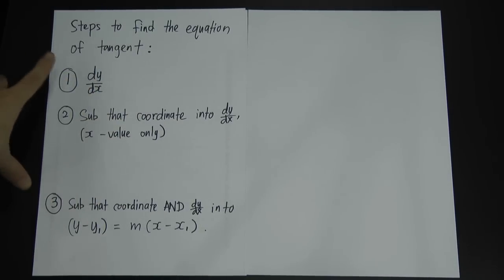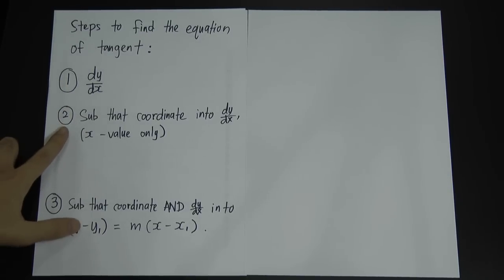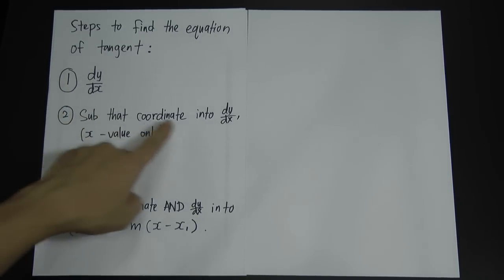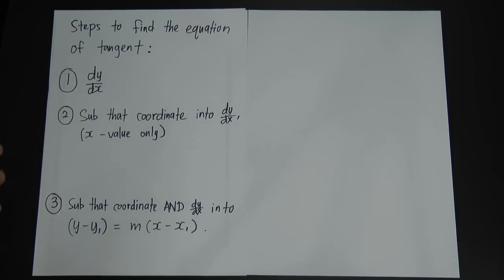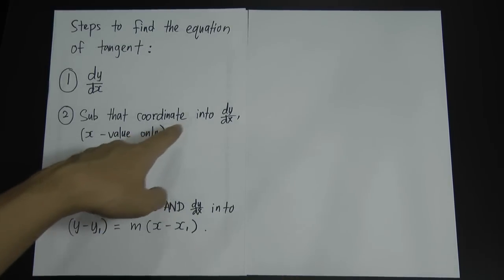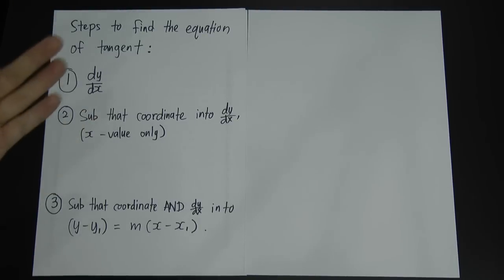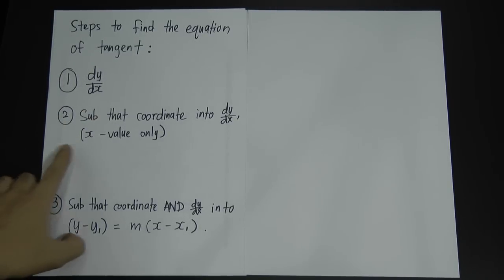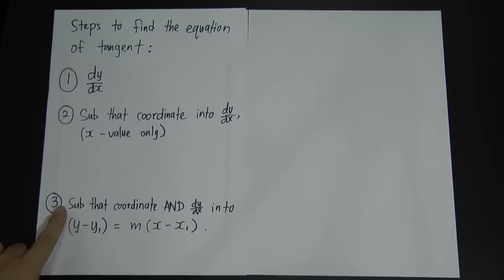This is the step to find the equation of tangent. First step: just do dy/dx — no matter what equation you have, you just differentiate it. Second step: substitute the coordinates into dy/dx. Normally the question would say find the equation of tangent at point A, so you just substitute the x value of point A into dy/dx. Remember, only the x value.